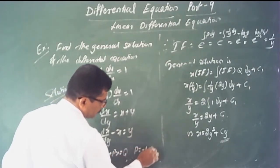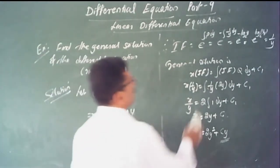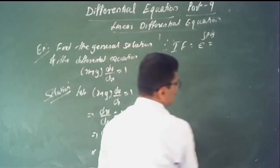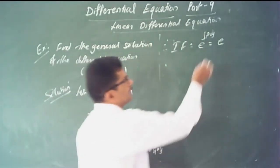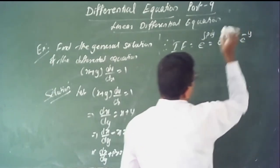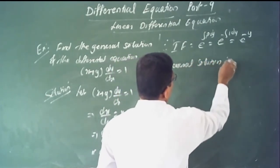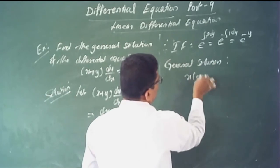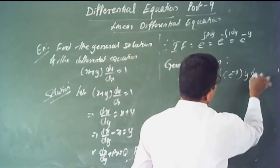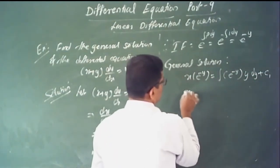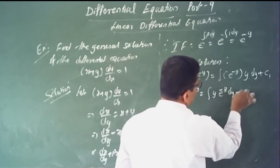The integrating factor is e to the power of the integral of minus 1 dy, which equals e to the power minus y. The general solution is x times e to the minus y equals the integral of e to the minus y times y dy plus constant, using integration by parts where algebraic function y is first and exponential e to the minus y is second.